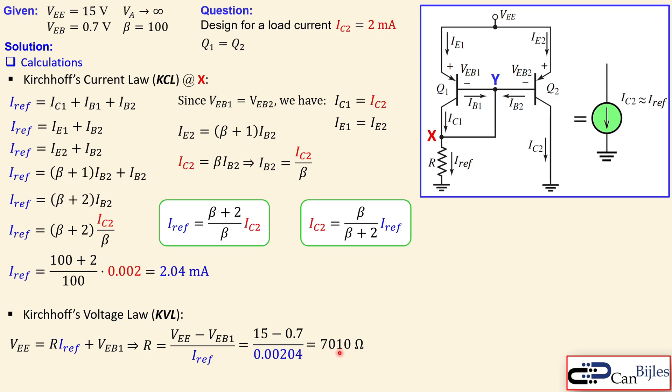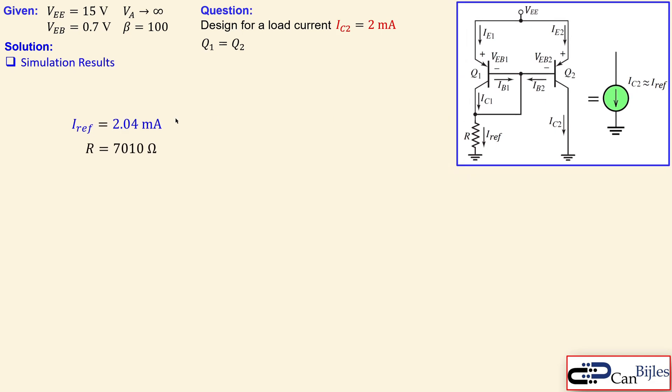So 7.01 kilo ohms. So let's see if this resistor value will do the job for this design. And also verify the reference current and also the load current. So let's move on to the simulation results.